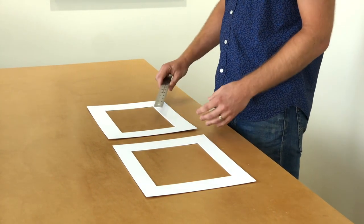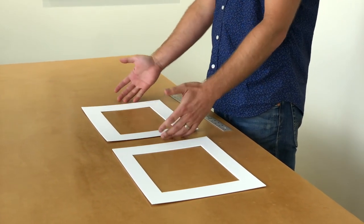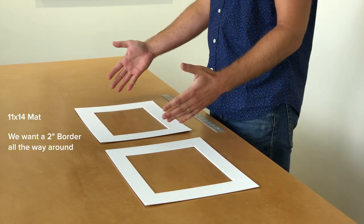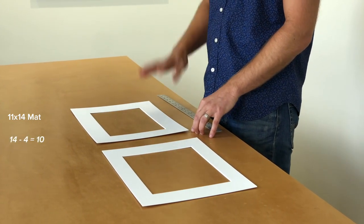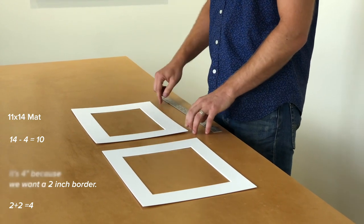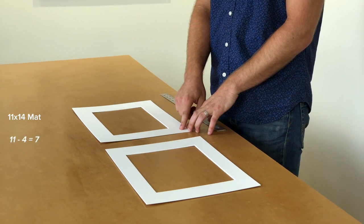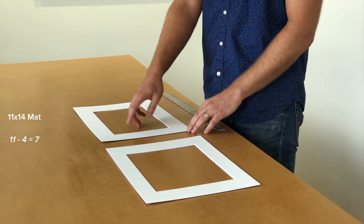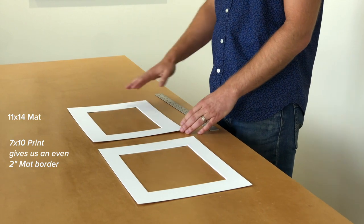So let's do the math real quick on the even border and I can show you how easy it is to calculate. Let's go backwards this time. We'll start with the mat size and work down to see what print size we need. We know we want a 2 inch border, so we take the 11 by 14 mat because let's say we have a frame that's 11 by 14 and we need it to fit in that. So you'll take 14 minus 4, not minus 2, because you've got two sides, so you have to double it. So 14 minus 4 gives you your 10 inch length on one side of the print. And then on the short side you have an 11 inch tall mat, minus 4, so 11 minus 4 is 7. So your print would be 7 by 10, and that will give you a 2 inch perfectly even border all the way around.